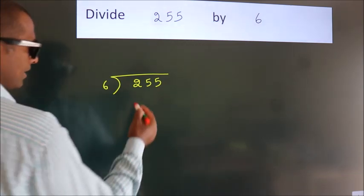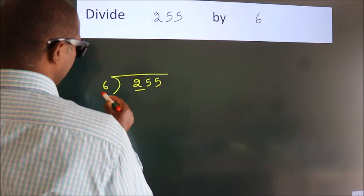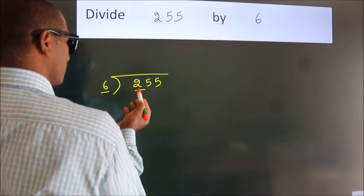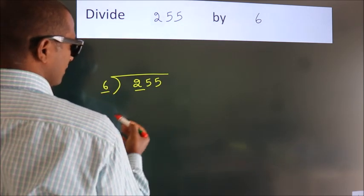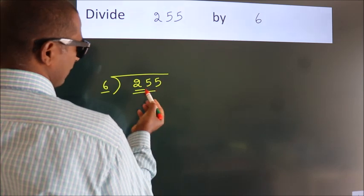Next, here we have 2, here 6. 2 smaller than 6. So we should take 2 numbers, 25.